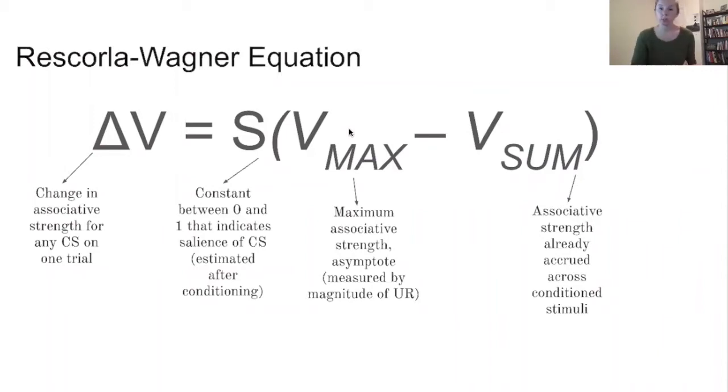The purpose of the Rescorla-Wagner equation is when you are pairing a neutral stimulus with an unconditioned stimulus such that eventually that neutral stimulus will become a conditioned stimulus. You use this equation to see to what extent the neutral stimulus is eliciting the same response as that initial unconditioned stimulus. The equation is used per trial where each trial is a single pairing of the unconditioned stimulus and the neutral stimulus. That associative strength gets stronger across trials as those are paired.